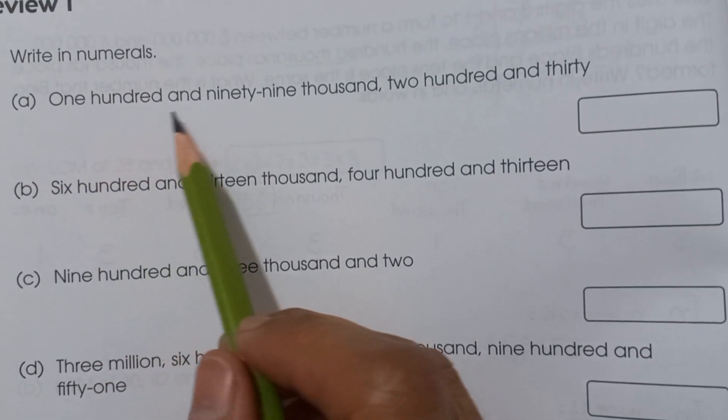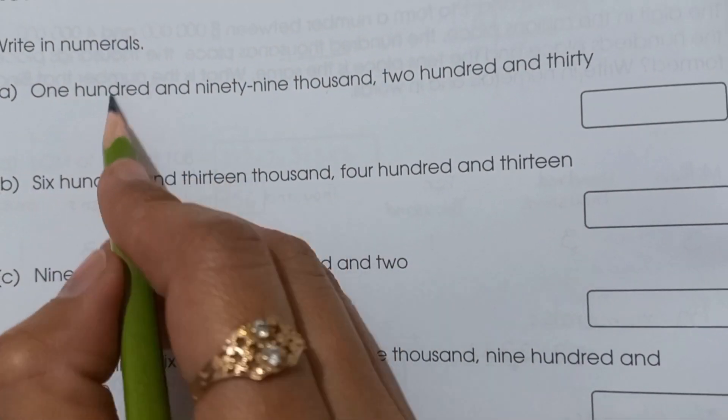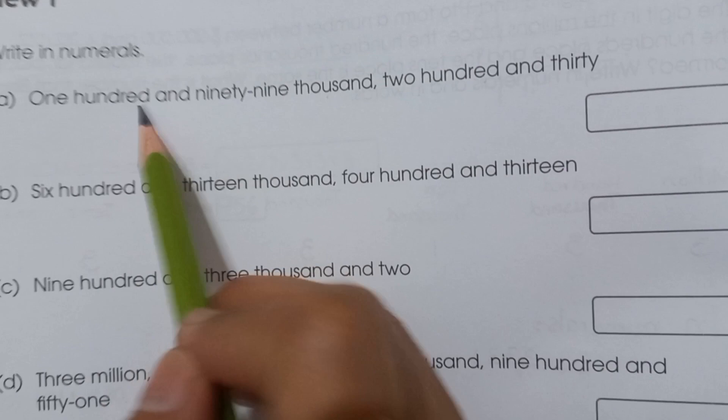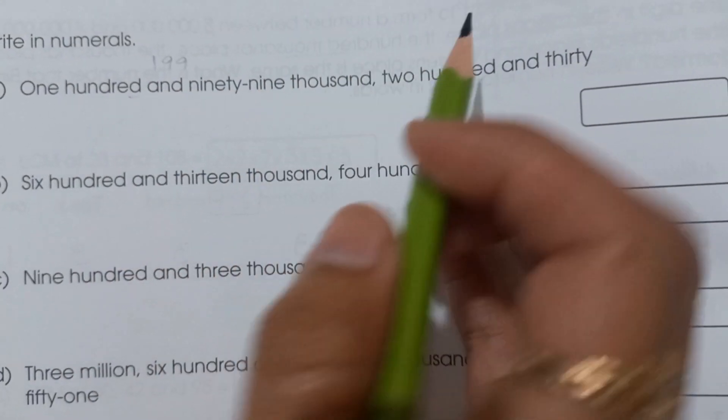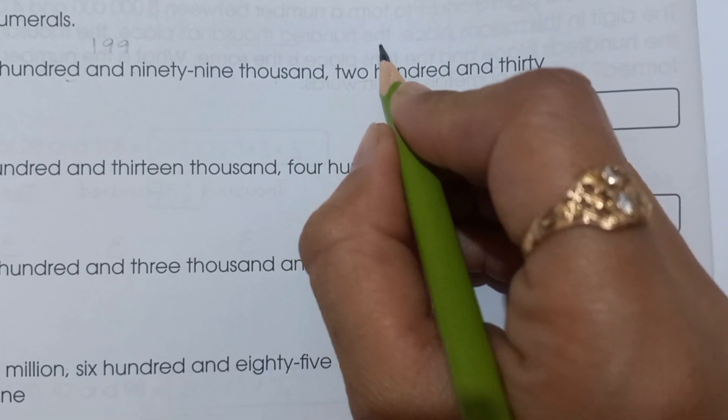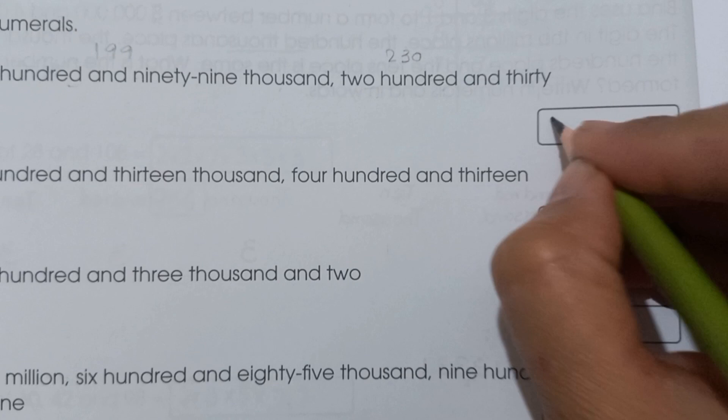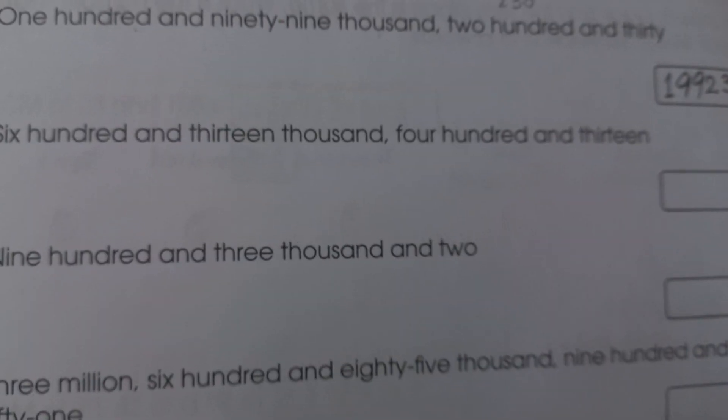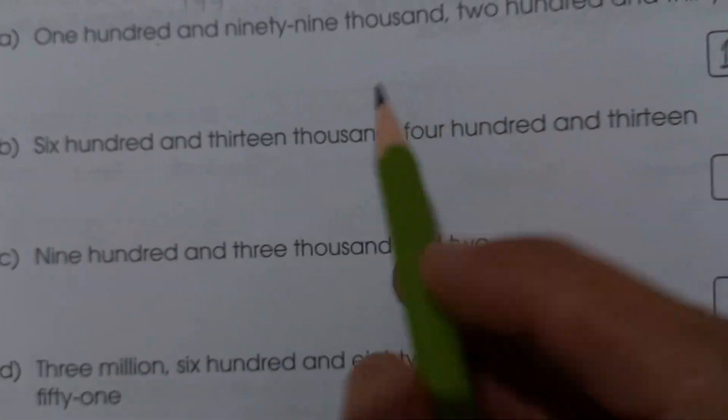Part (a): one hundred and ninety-nine thousand, two hundred and thirty. First, let's see the comma section. In the comma section, we write 199, comma here for thousand, then 230. So: 199,230.